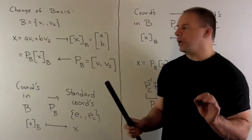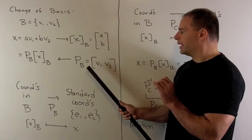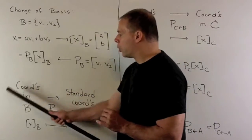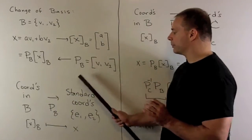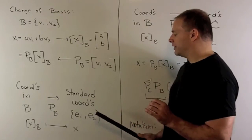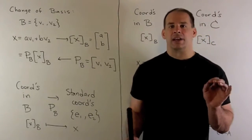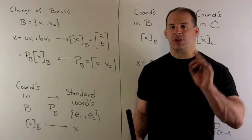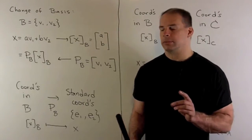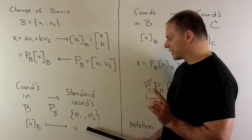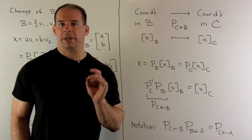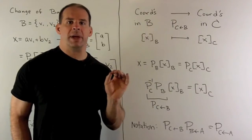So, what am I doing with P_B? This carries us from coordinates in our basis B to the standard coordinate system. So, here I have E1 and E2. E_i is just going to have a 1 in the i-th coordinate and then 0s everywhere else. So, P_B is just going to carry X_B to X.